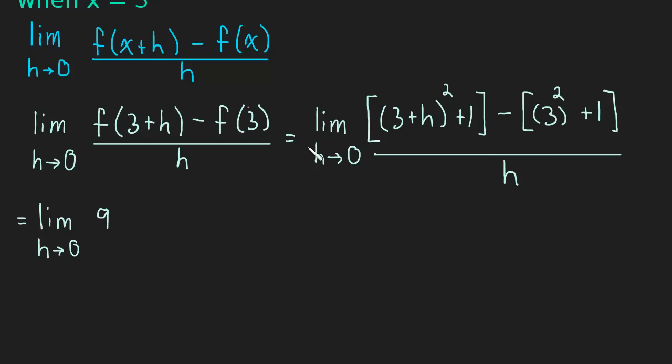Let's expand this. So that's going to be 9 plus 6h plus h squared plus 1. So that's that first bit here, minus 9 minus 1 divided by h.